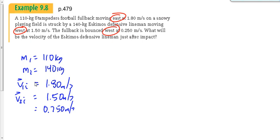0.25, the fullback bounced west. Who's the fullback? The Stampeders player bounced west. Is that V1 or V2? It's V1, the Stampeders player. Is it V1i or V1f? It's going to be V1f. And we're looking for, what are we looking for here? V2f. I'm telling you, you're doing these conservation of momentum problems, the givens are it. That's the hard part. Once you get past the givens, it's just math. The givens can be a little hard to identify.